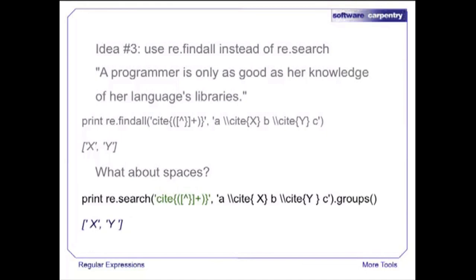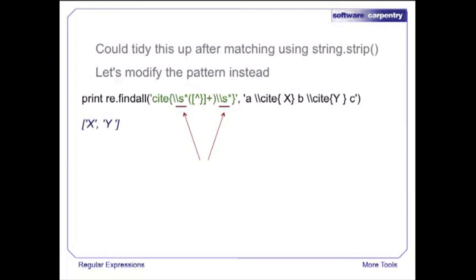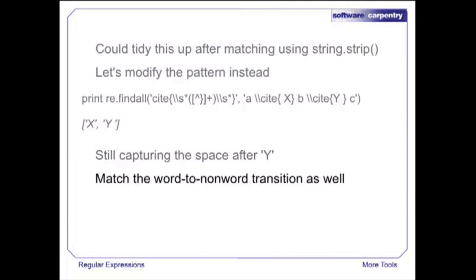What about spaces in citations? Nothing breaks, but the spaces are saved by findall, which isn't really what we want. We could use string.strip to tidy up after the fact, but let's modify the pattern instead. Backslash-s-star matches zero or more spaces immediately after the opening curly brace or immediately before the closing one. However, the space after the label text is still being returned — regular expressions are greedy, and the space isn't a closing curly brace so it's matched by the negated set. Let's force our match to line up with word boundaries using backslash-b.